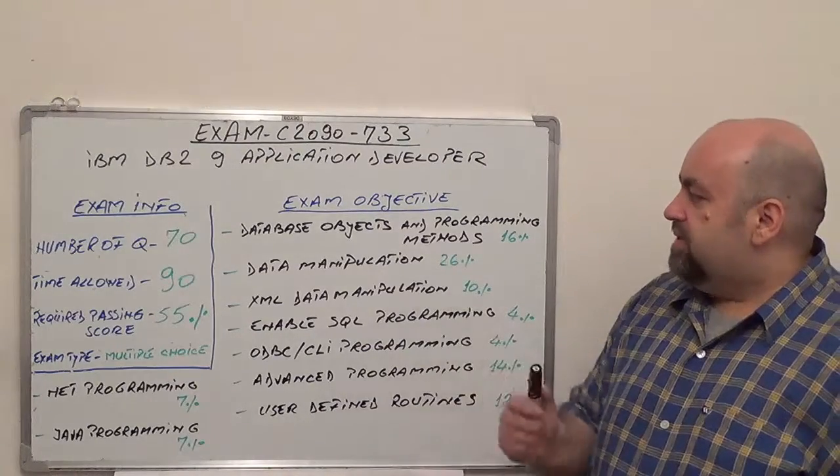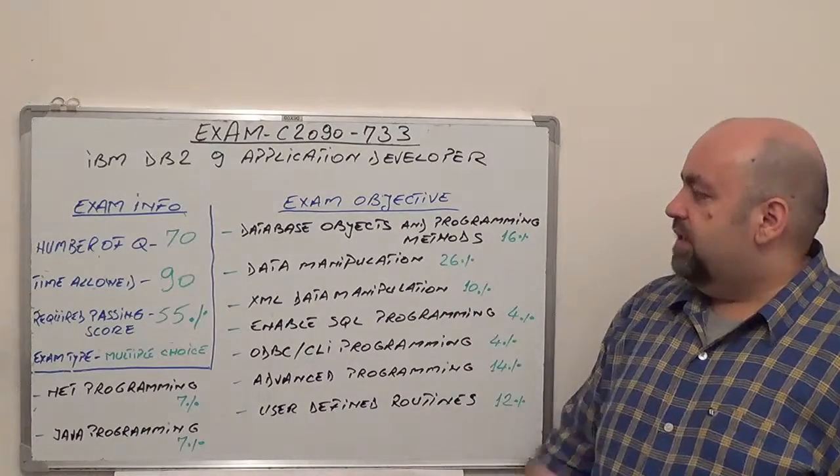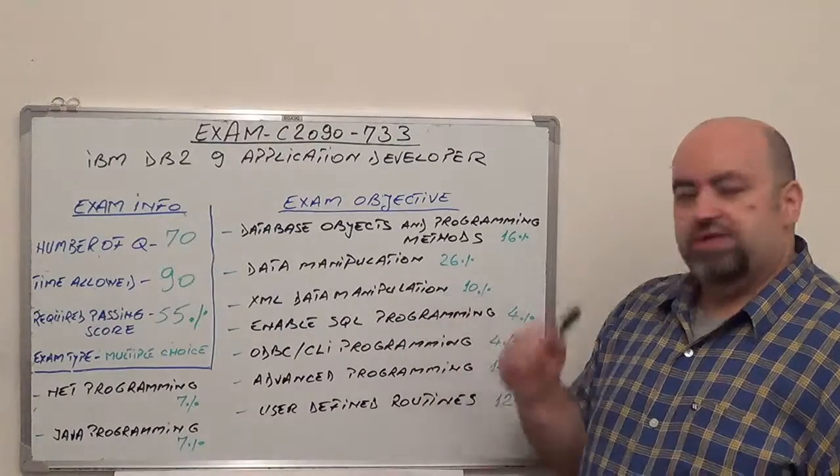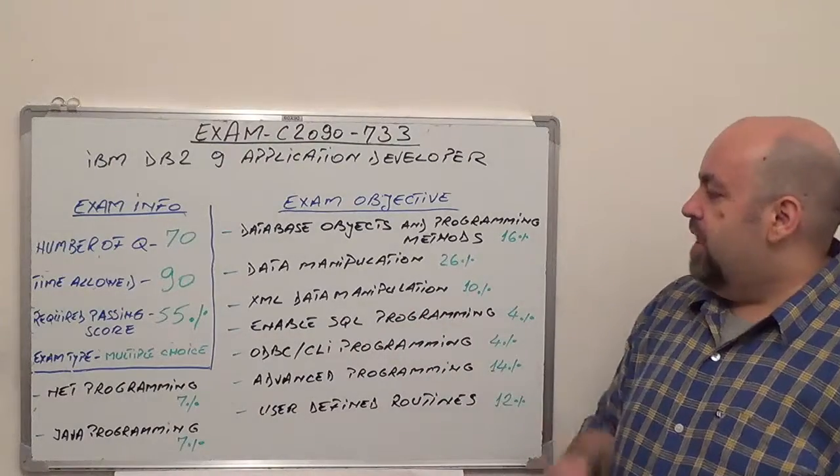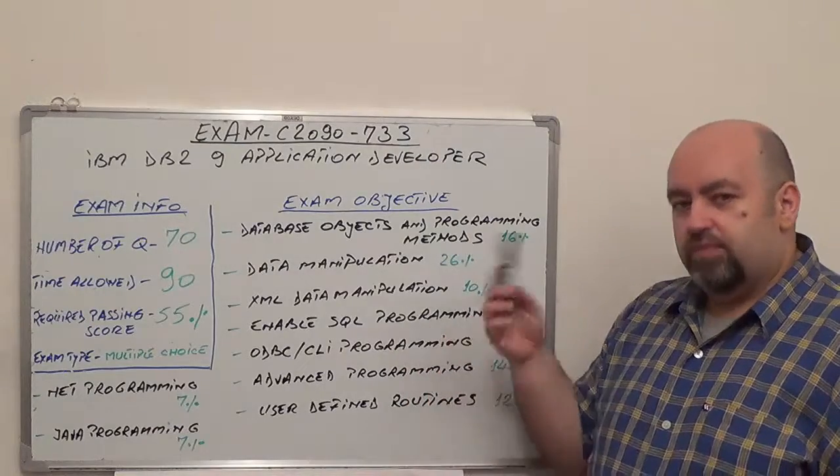The third one is Database Object and Programming Methods, with 16% from total of questions. After that, we're going to have Data Manipulation, 26% from total of questions, followed by XML Data Manipulation, 10% from total of questions.